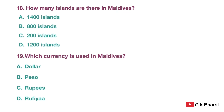Next. How many islands are there in Maldives? Option A: 1,400 islands. Option B: 800 islands. Option C: 200 islands. Option D: 1,200 islands. Your correct answer is 1,200 islands.